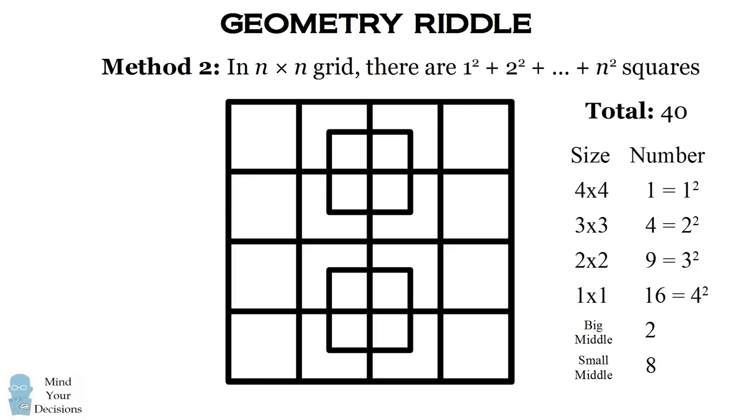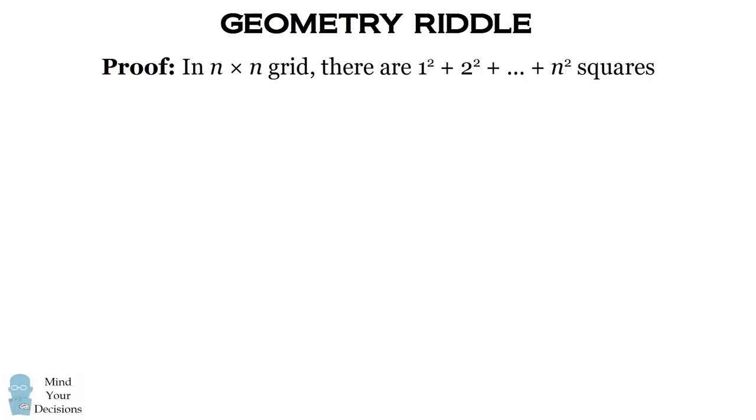So you can intuitively see why this formula is true. You count the number of squares created per row and the number of rows you have. But let me just provide another proof.